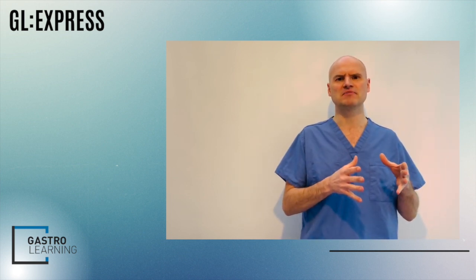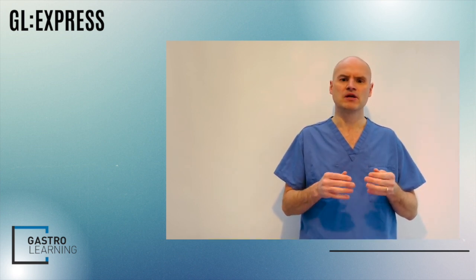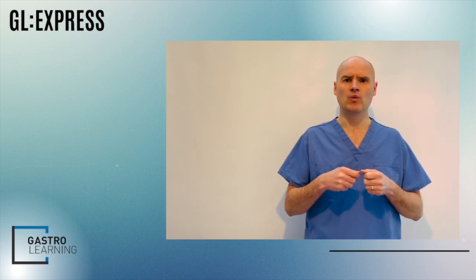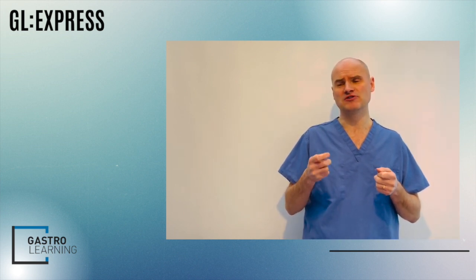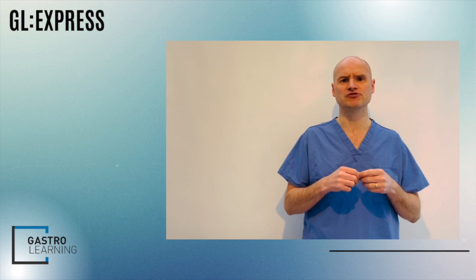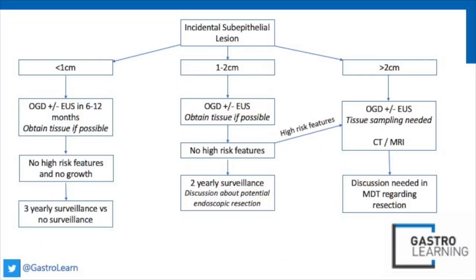Lesions less than one centimetre are even trickier, because the likelihood of these ever doing anything is incredibly low. We can refer them for an EUS, but what I would generally do is advise referring these patients for an OGD plus or minus an EUS in about six months to a year, so you can see if they have grown in that interval and determine whether they are actually a higher-risk lesion.